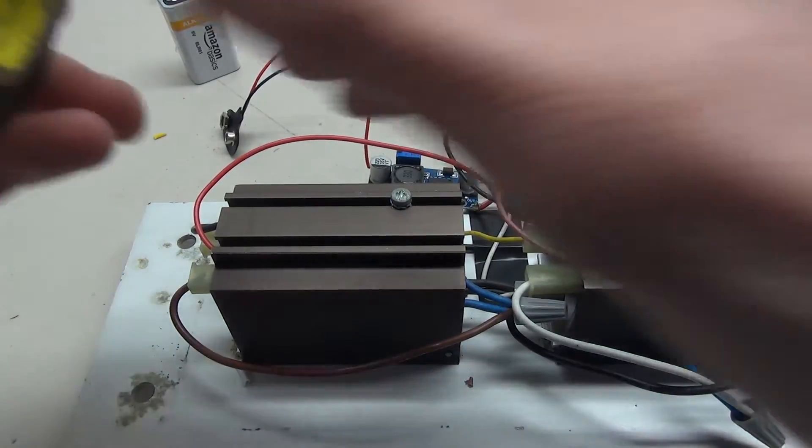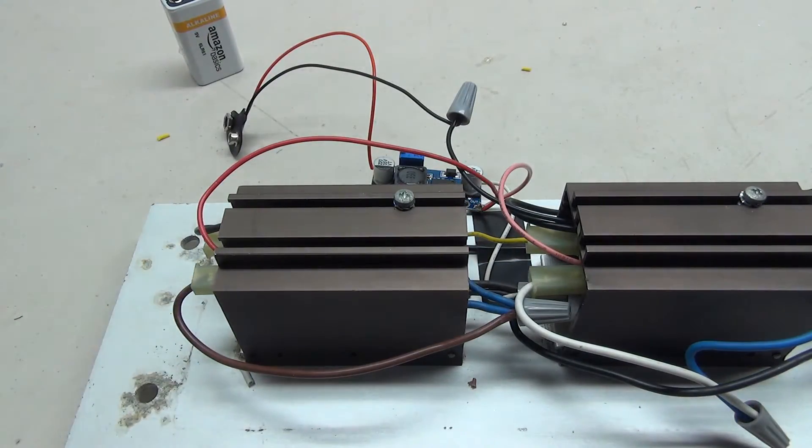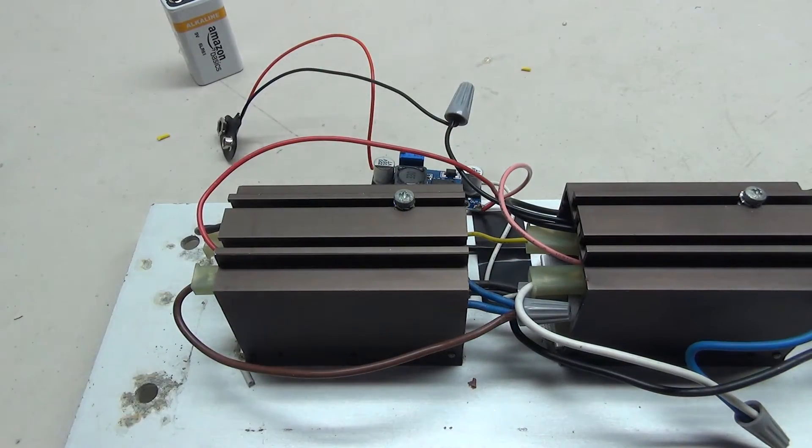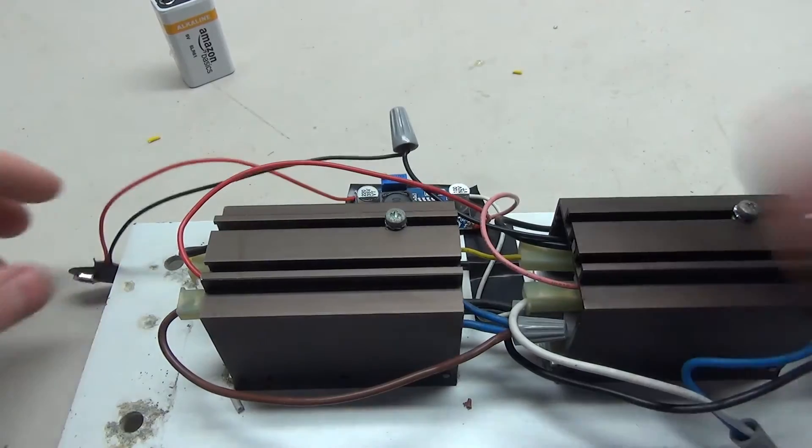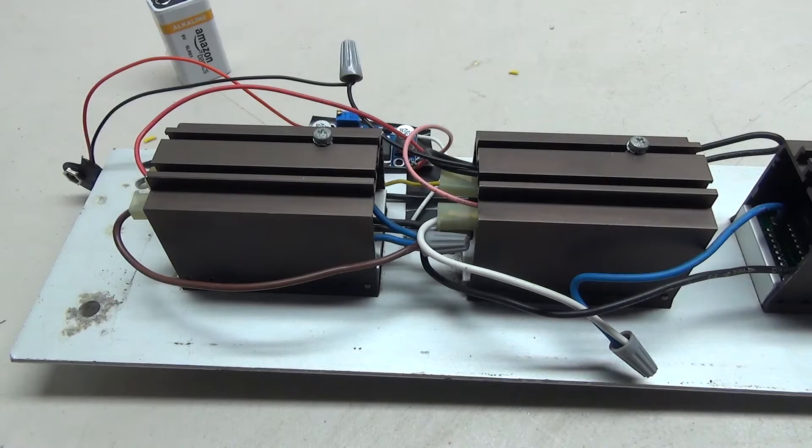All right, so here we have the wiring complete. I'm just going to grab some electrical tape and cover up the bottom of this little board so we don't short anything. There we go, covered the back. So the real question is now will it work? What we need to do is adjust this thing to 24 volts which we're going to do pretty easily.